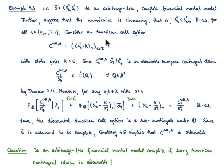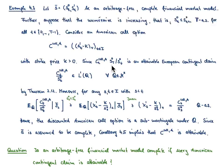Let us now consider an American call option. It is the process given at every time point t by the positive part of the difference between the price process of our risky security and the strike price K, which we assume to be strictly positive. Consider now the random variable consisting of the American call option at time t multiplied by the ratio of the numeraire at time T divided by the numeraire at time t. This object is a non-negative F_T-measurable random variable, hence a new European contingent claim.